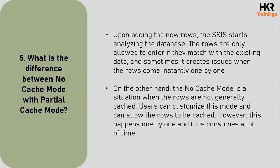The fifth question: what is the difference between no cache mode and partial cache mode? Upon adding new rows, SSIS starts analyzing the database. Rows are only allowed to enter if they match with the existing data, and sometimes this creates issues when rows come instantly one by one. In no cache mode, rows are not generally cached; users can customize this mode to allow rows to be cached, but this happens one by one and thus consumes a lot of time.